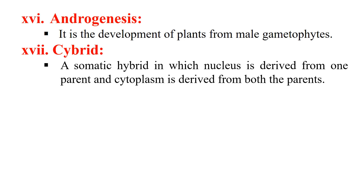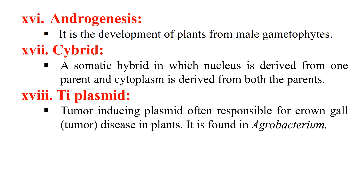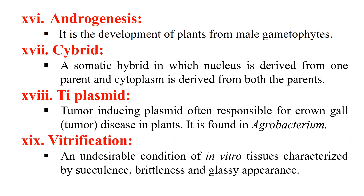The next term is Ti plasmid — Ti means tumor-inducing plasmid. It is a plasmid responsible for causing crown gall disease in plants, and it is present in Agrobacterium tumefaciens. This Ti plasmid is also used for Agrobacterium-mediated transformation in plant tissue culture. The next term is vitrification — in plant tissue culture, sometimes there is an appearance of brittleness or a glassy appearance, and this glassy appearance is known as vitrification.